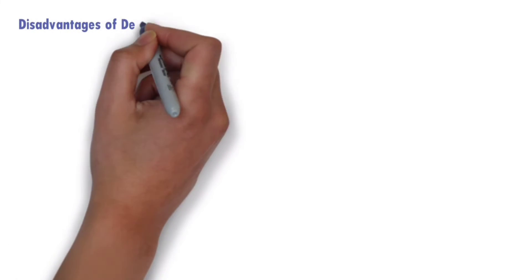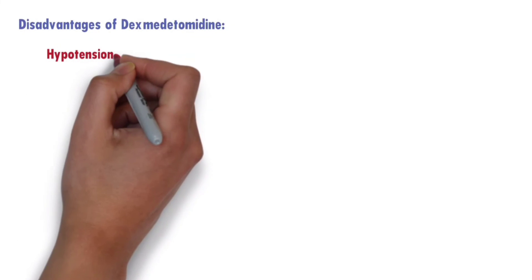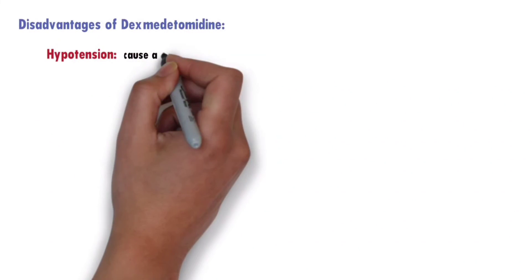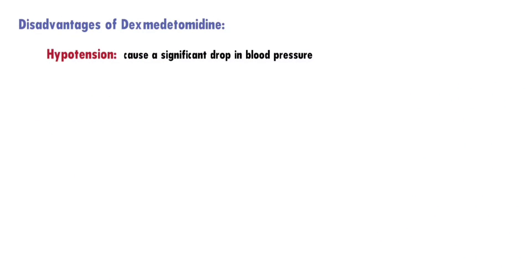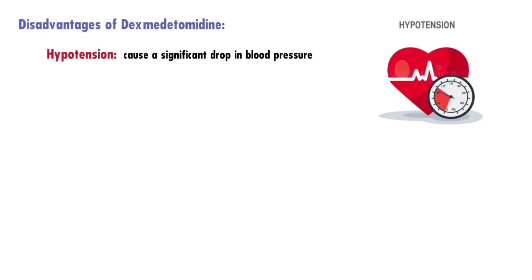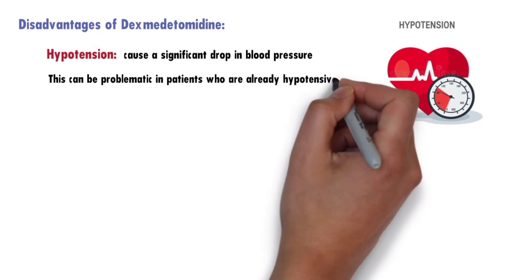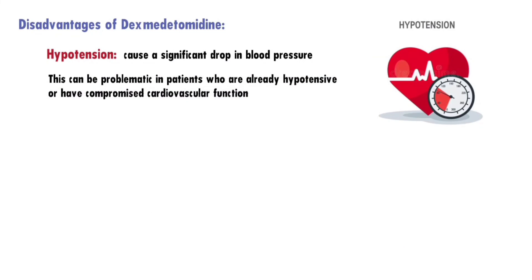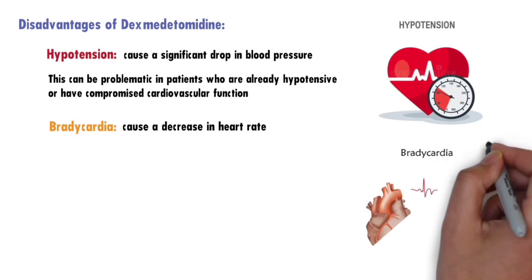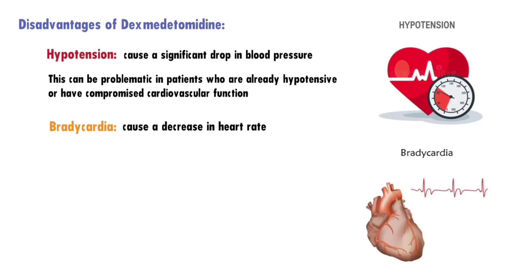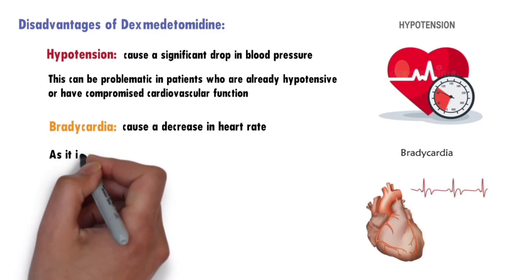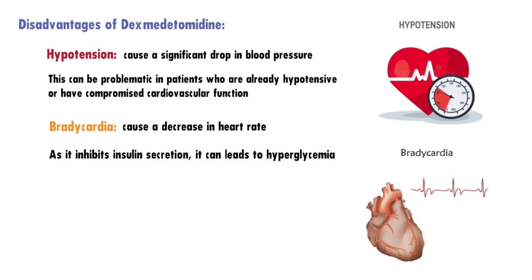Disadvantages of dexmedetomidine: Hypotension — dexmedetomidine can cause a significant drop in blood pressure, especially during the initial loading dose, which can be problematic in patients who are already hypotensive or have compromised cardiovascular function. Bradycardia — it can cause a decrease in heart rate, which is particularly significant in patients with pre-existing cardiac conditions or those taking other medications that affect heart rate. As it inhibits insulin secretion, it can also lead to hyperglycemia.